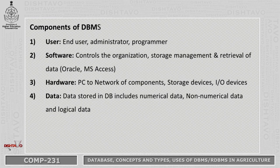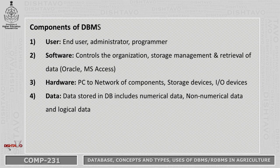What are the components of a database management system? First is the end user — such as a system administrator or programmer. Next is software, which controls the organization, storage management, and retrieval of data — like MS Access or Oracle. Next is hardware: PC, network of components, storage devices, and input/output devices. And last is data — DBMS stores numerical, non-numerical, alphanumerical, logical data, and any type of data.